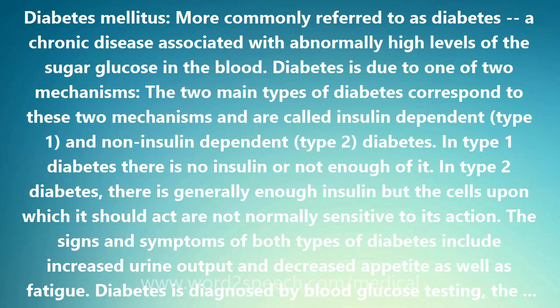Diabetes is diagnosed by blood glucose testing, the glucose tolerance test, and testing of the level of glycosylated hemoglobin — glycohemoglobin or hemoglobin A1c. The mode of treatment depends on the type of the diabetes.